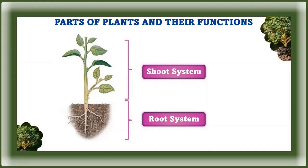The shoot system consists of stems, leaves, and the reproductive parts of the plant — flowers and fruits. The shoot system generally grows above the ground where it absorbs the light needed for photosynthesis. The root system, which supports the plant and absorbs water and minerals, is usually underground.